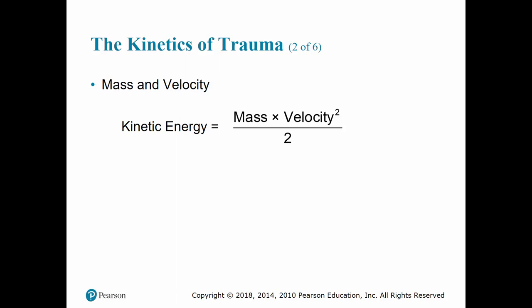Kinetic energy in a moving body is calculated this way: the mass and weight in pounds, times the velocity or speed in feet per second, squared, divided by 2. For example, let's say you have a 200 pound man falling at 6 feet per second. So that's 200 times 6, squared, divided by 2.